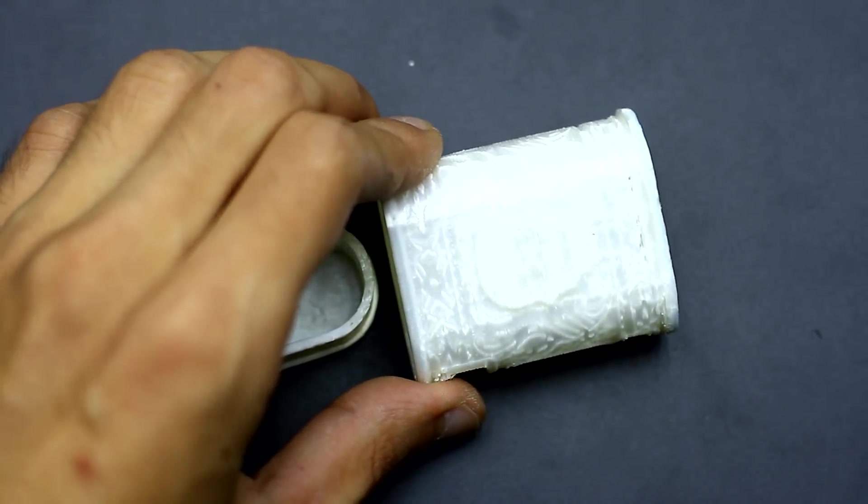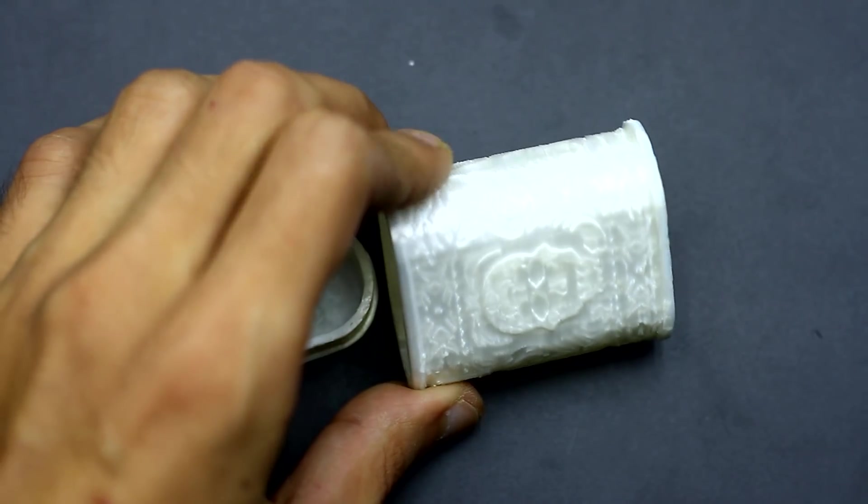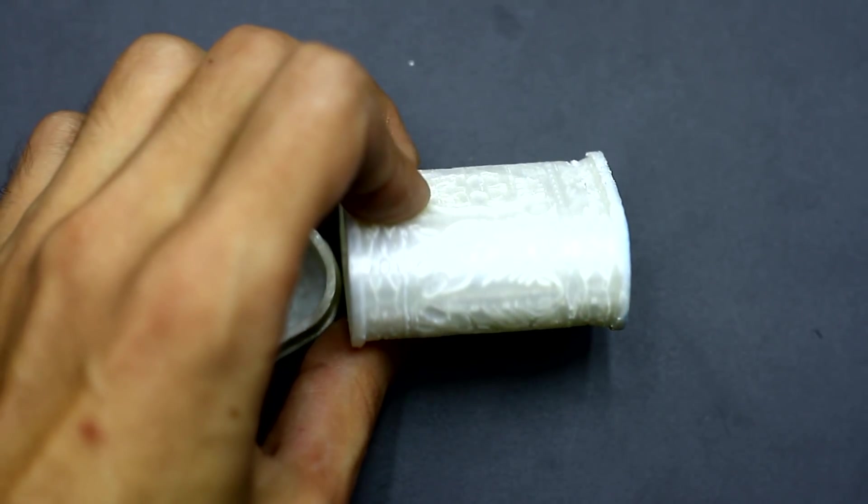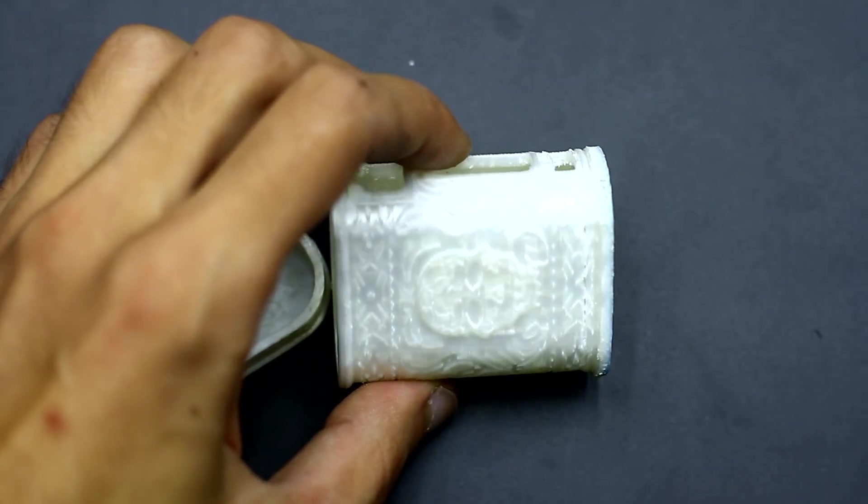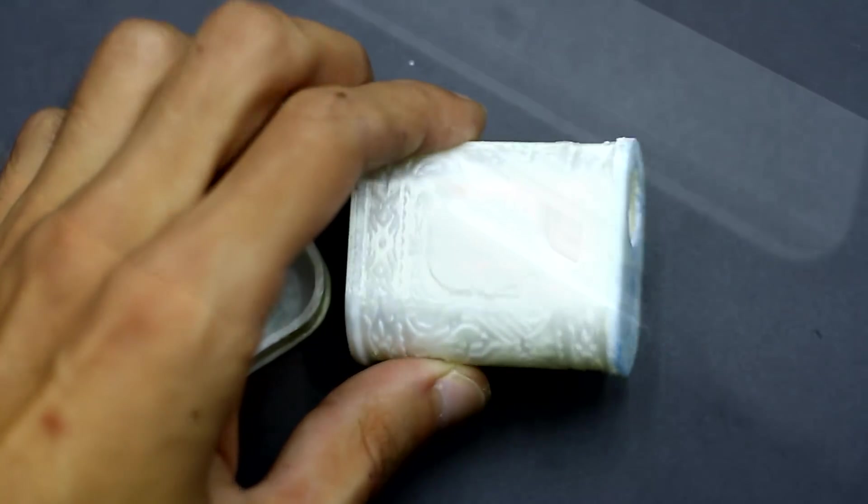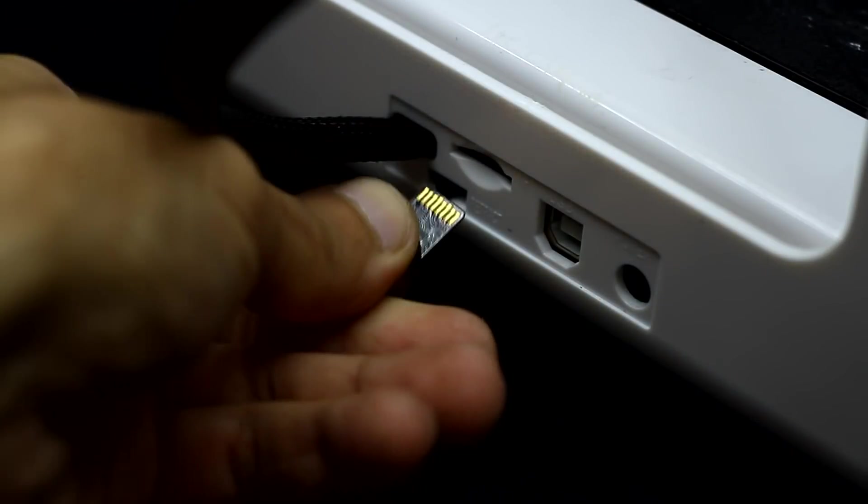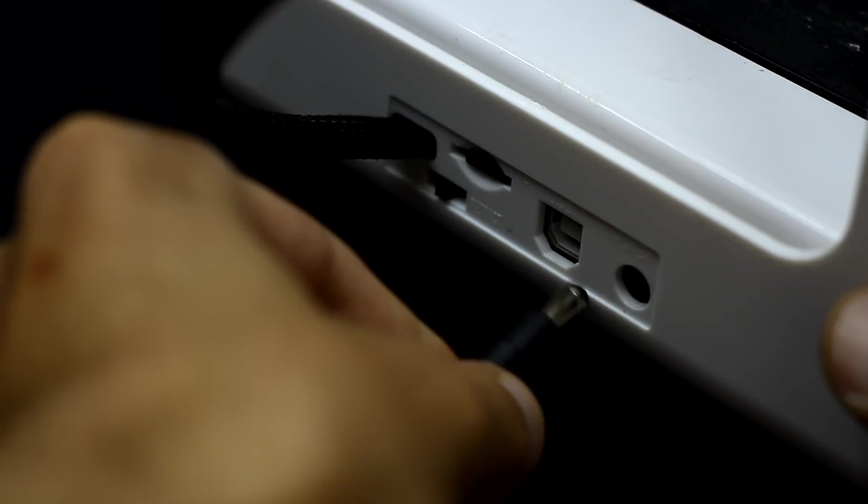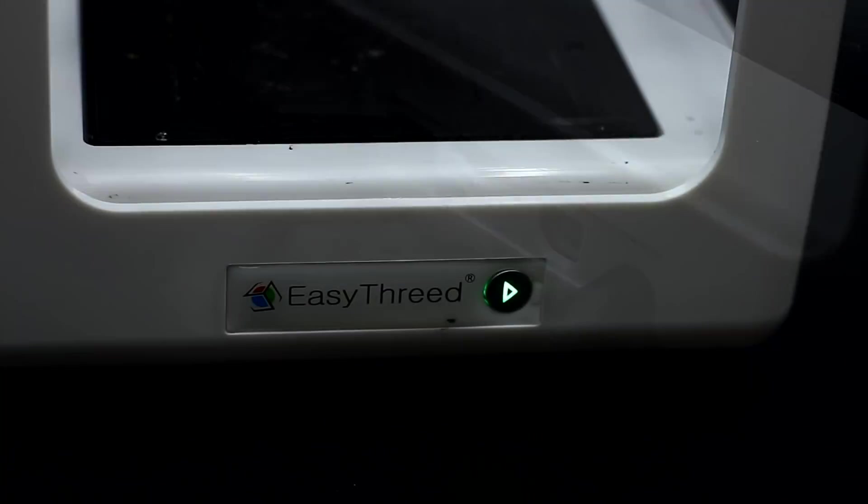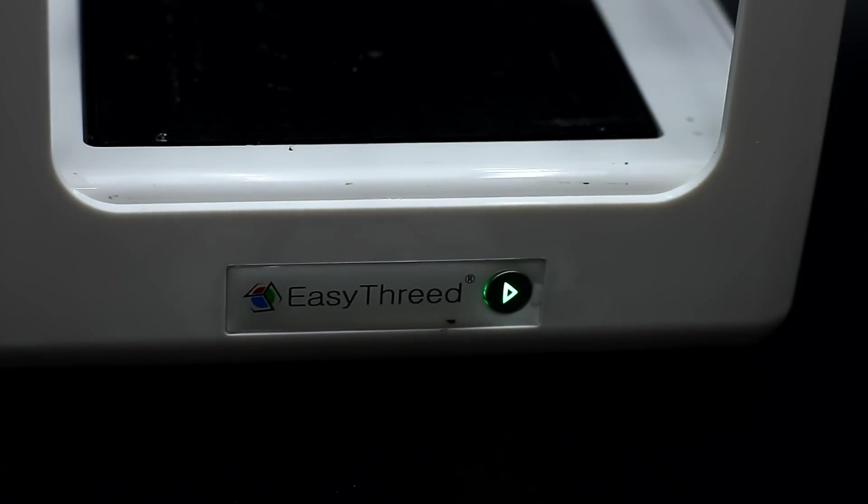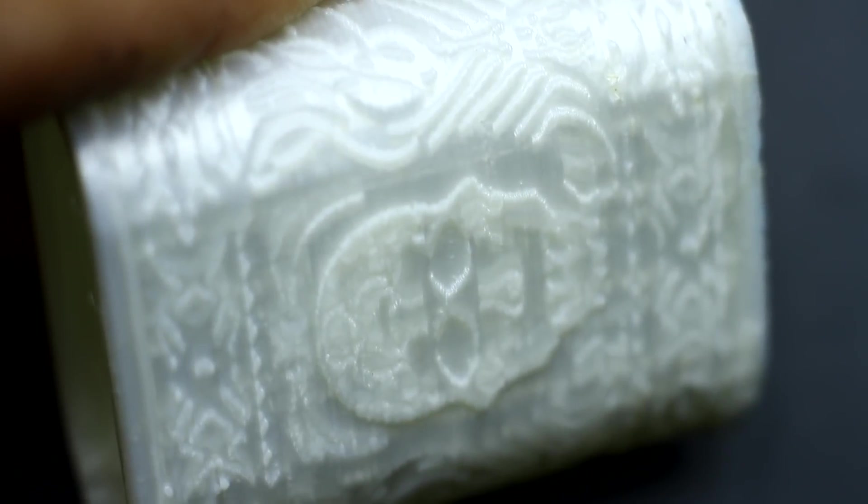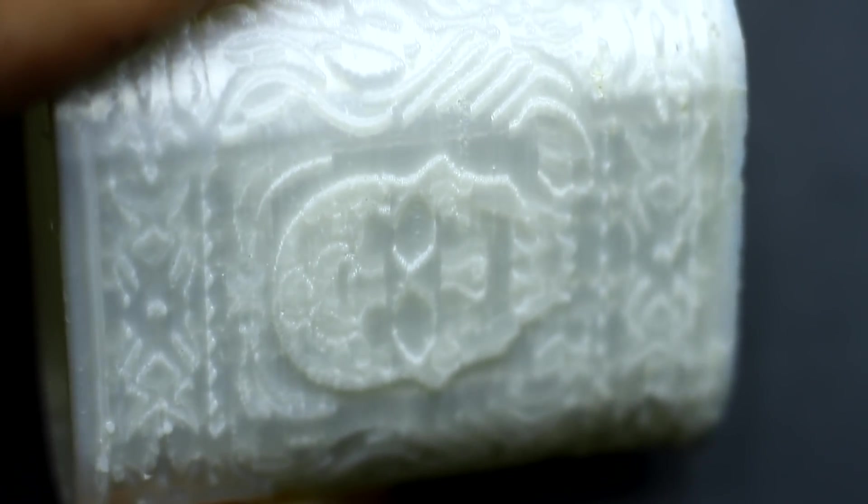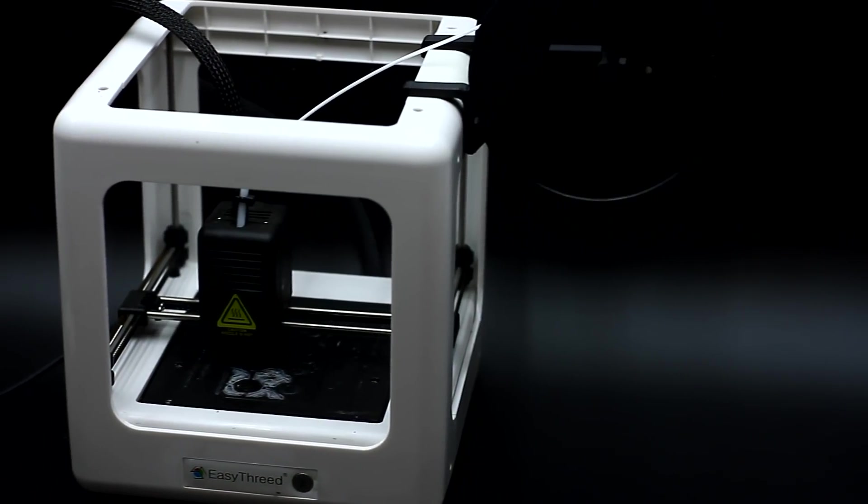Searching at sites where you can download free models for printing, I came across a cover for an e-cigarette. I calculated the dimensions and started printing. The printer is very simple. I just uploaded the file to a memory card, inserted it in the printer, and pressed one button.